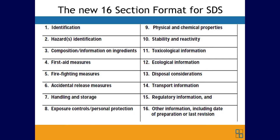Sections 1 through 8 contain general information about the chemical: identification, hazards, composition, safe handling practices, and emergency control procedures like firefighting — information helpful to those who need it quickly. Sections 9 through 11 and 16 contain technical and scientific information such as physical and chemical properties, stability and reactivity, toxicological information, exposure control information, and the date of preparation or last revision. The SDS must also contain sections 12 through 15 to be consistent with the globally harmonized system, though OSHA will not enforce those sections as they concern matters handled by other agencies.